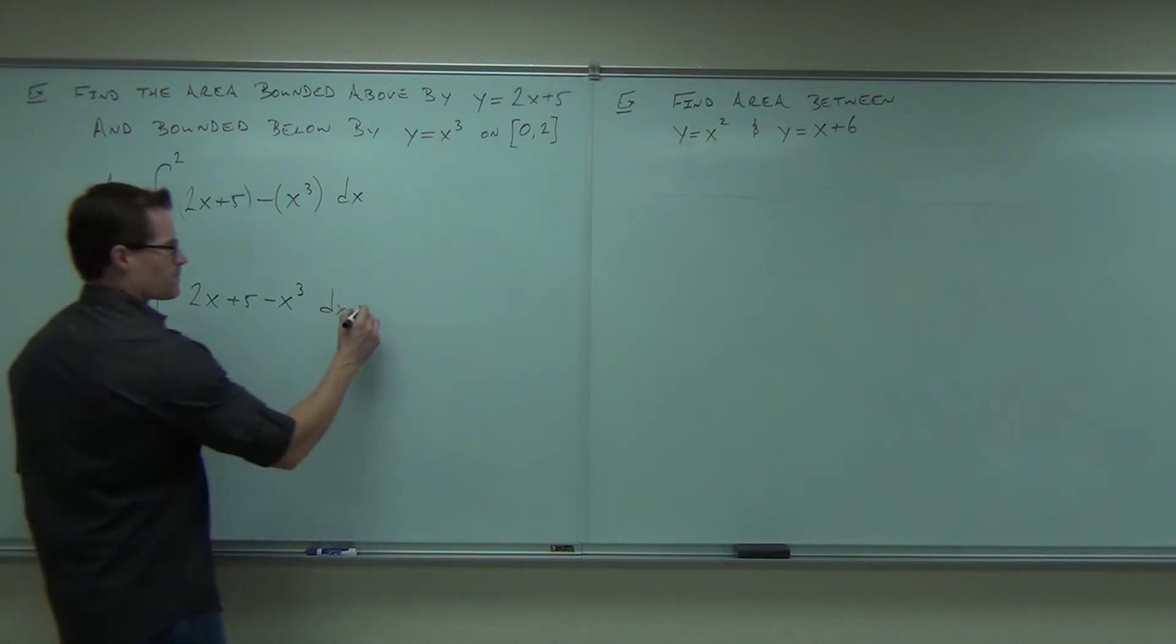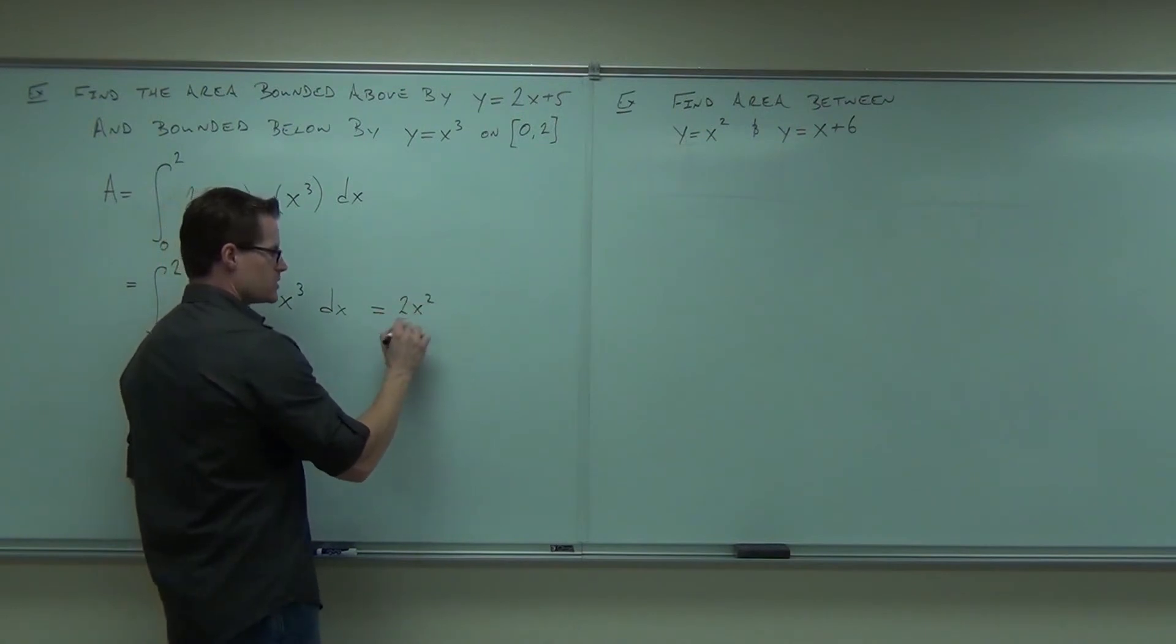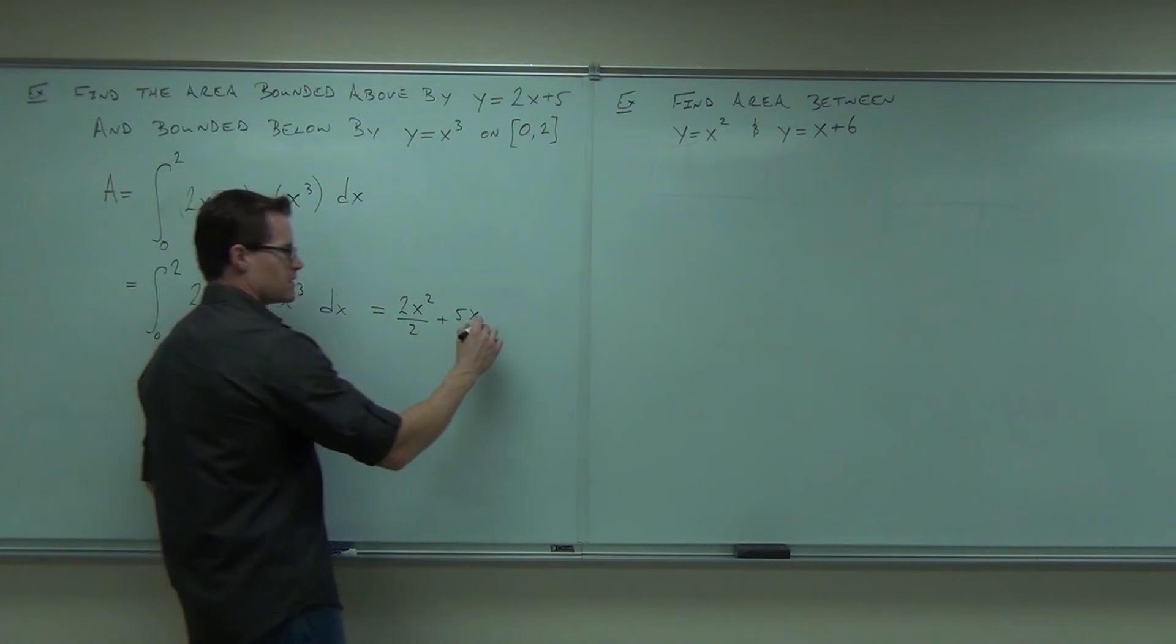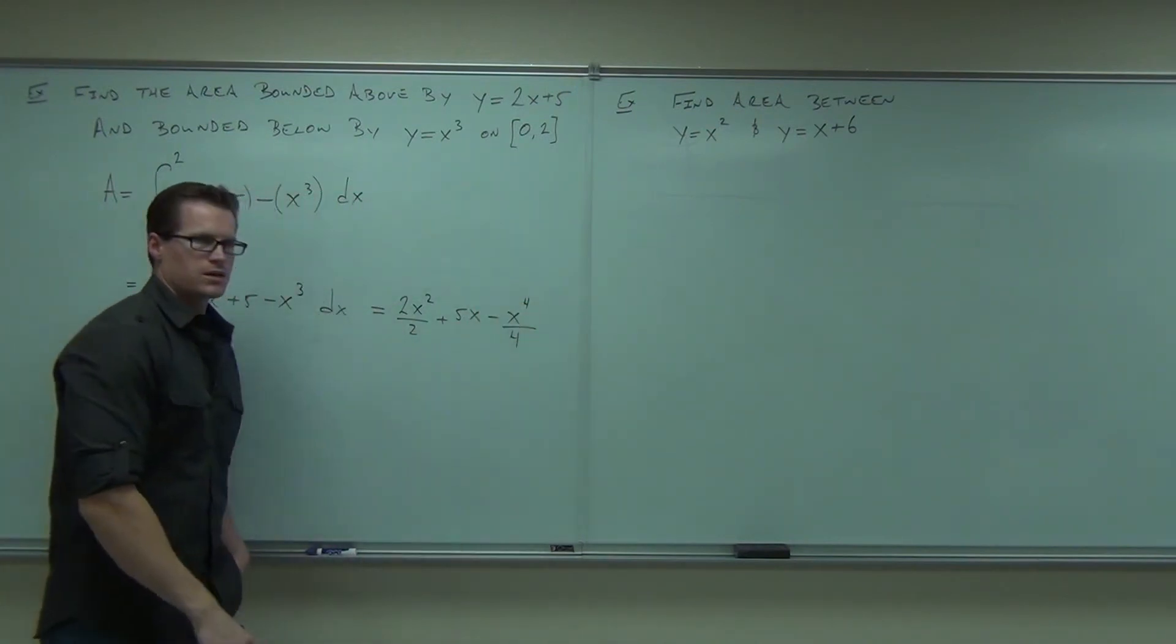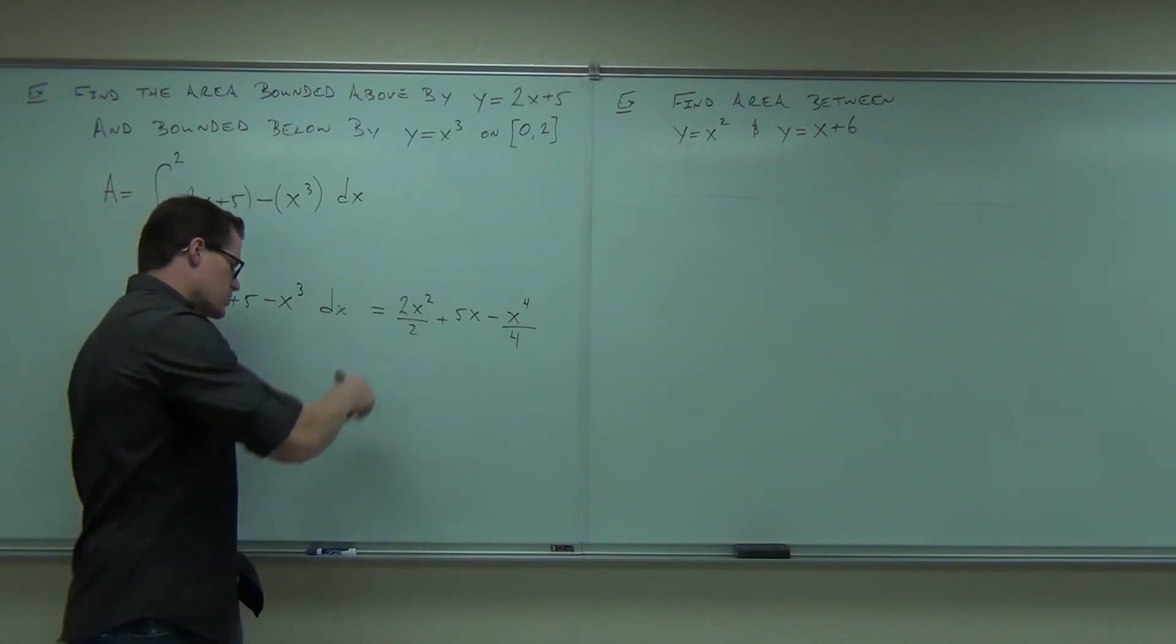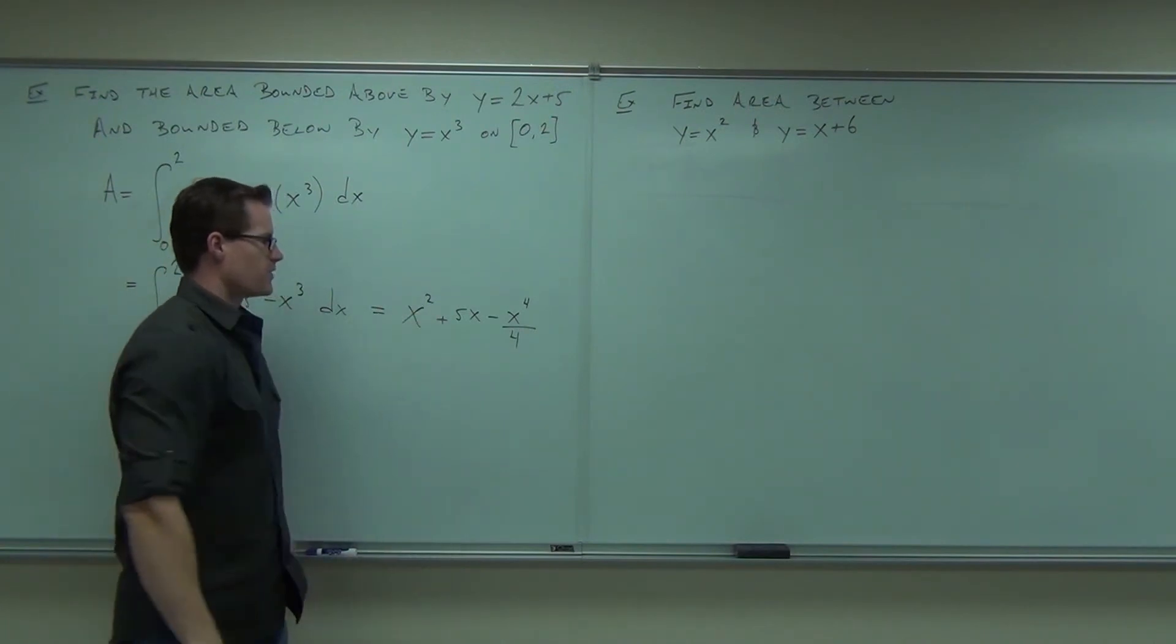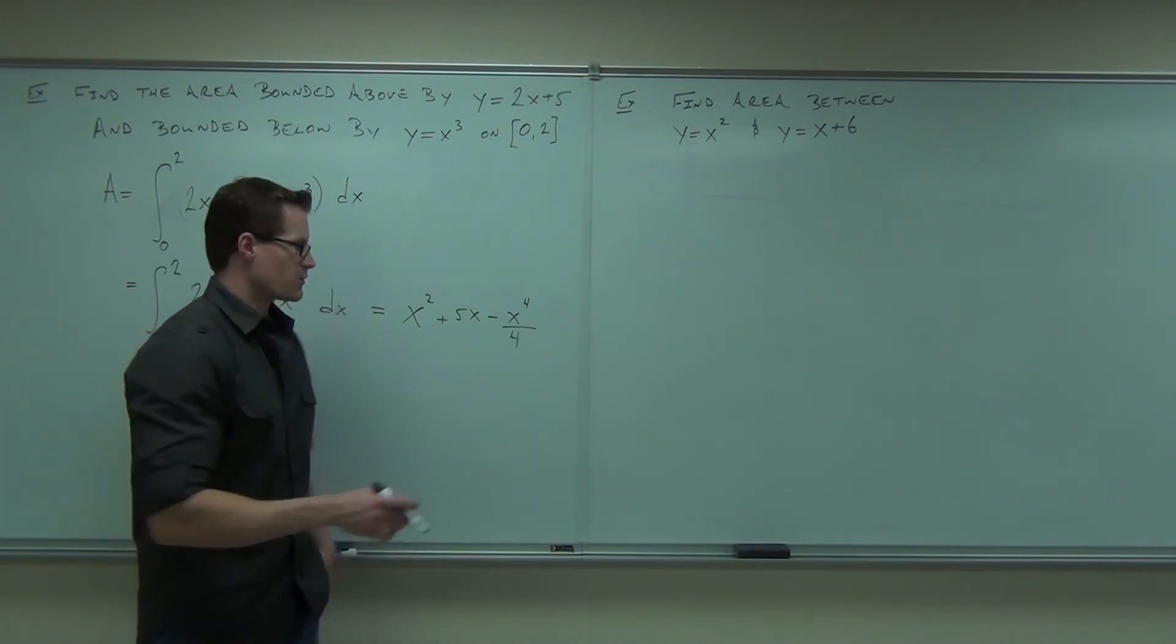So doing your integral here, hopefully you were able to come up with, which is what I'm going to do. So 2x squared over 2 plus 5x. Don't forget about that. 5x minus x to the 4th over 4. Yes or no? Now, of course, the 2, we can simplify that. So x squared plus 5x.